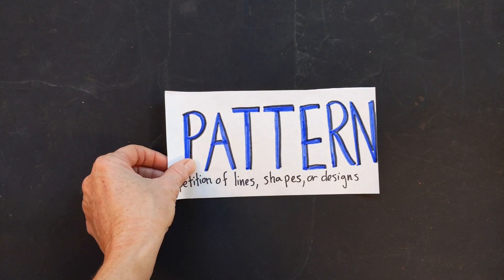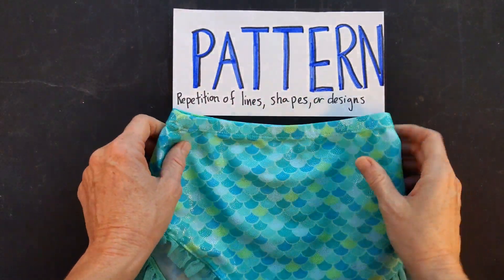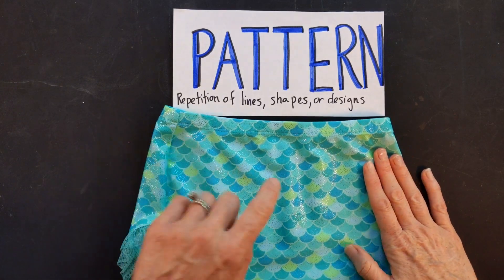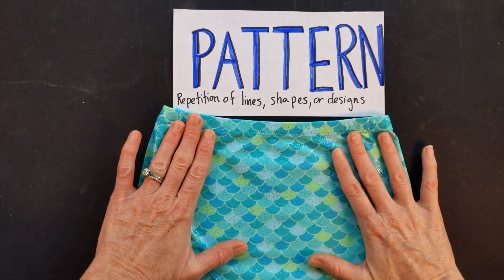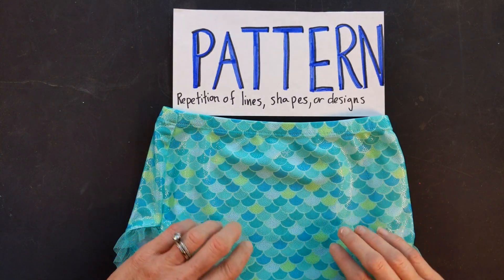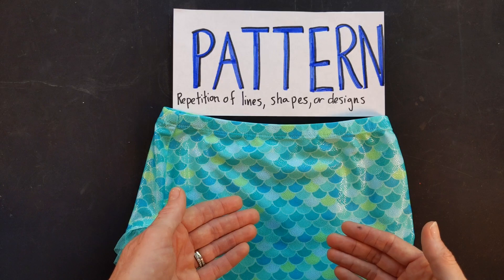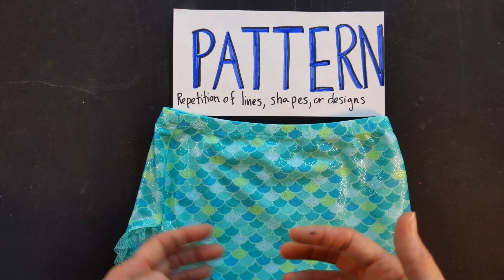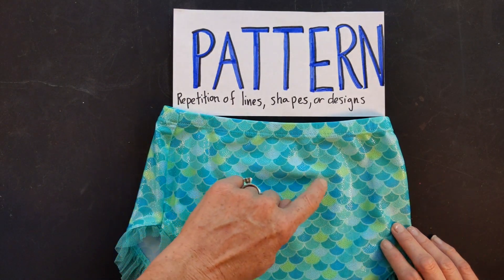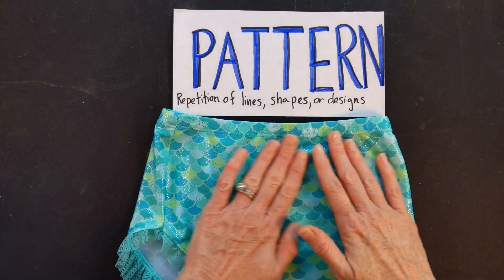I want to talk to you about some other things I've been finding here for pattern. Just looking around my house this morning I found my daughter's little mermaid tail. And what do we have here? We have a pattern. We have a repetition of this scallop shape all throughout the mermaid tail, but one fun thing also we have here is variety. And variety is that art word just meaning different.